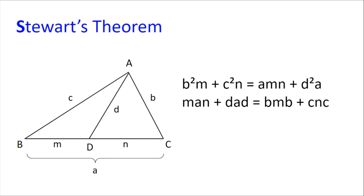Next, we have S for Stewart's theorem. Stewart's theorem gives us a relation between the side lengths of a triangle and a cevian length. Suppose we have triangle ABC with BC equal to A, CA equal to B, AB equal to C, BD equal to M, DC equal to N, and AD equal to D. Then B² × M + C² × N = AMN + D²A. We can rearrange to get the more memorable form: man + dad = BMB + CNC, which we can remember as 'man and his dad found a bomb in the sink.' We can get the same result from Pythagoras's theorem or from the cosine rule, but learning this mnemonic can prove to be very practical.